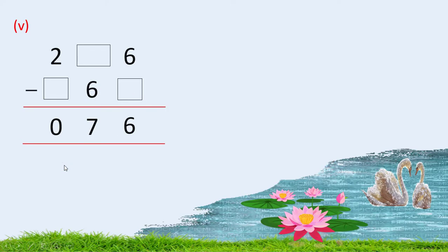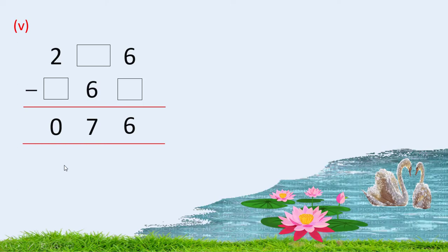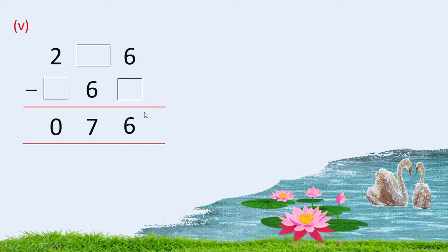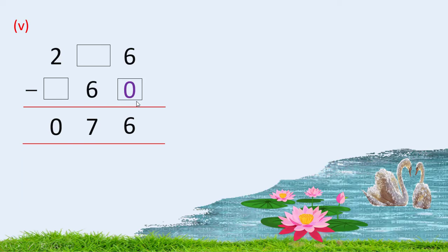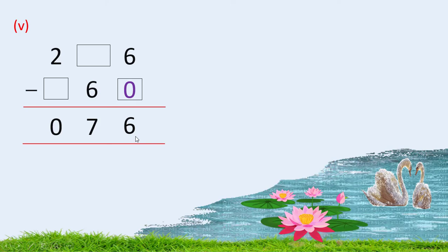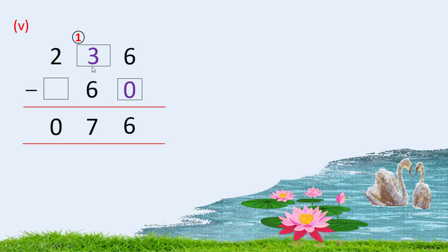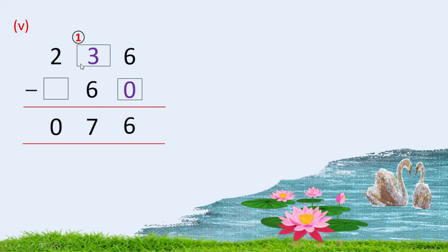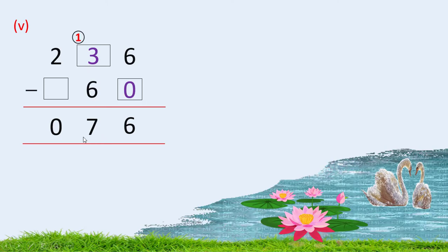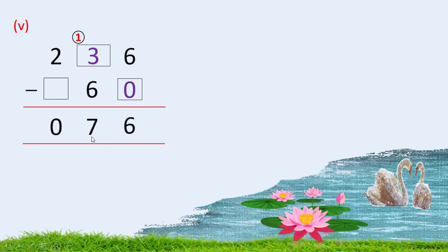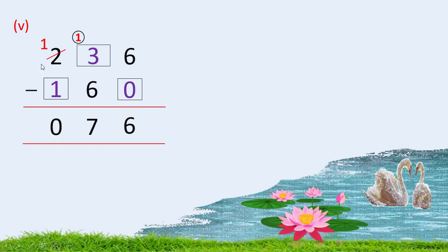The fifth part of Question No. 2: what we have to write in this box so that we get 6? That is 0, because 6 minus 0 is 6. In this box we write 3, because by taking borrow 1 from 2, we get 13. 13 minus 6 gives 7. And what remains: 1 minus 1 is 0.